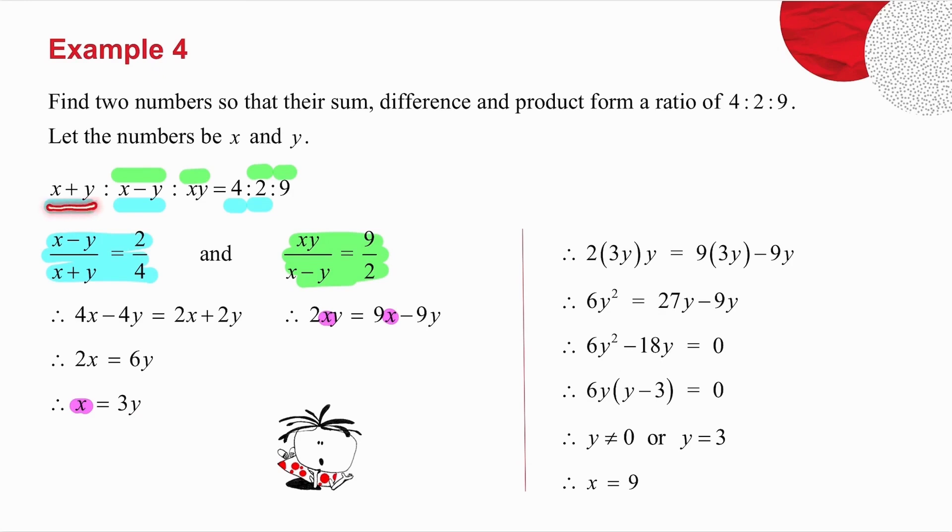That's not in the ratio of 4 to 2 to 9. So y cannot equal 0. The only answer I can have is y equals 3. And if y equals 3, then x must equal 9.